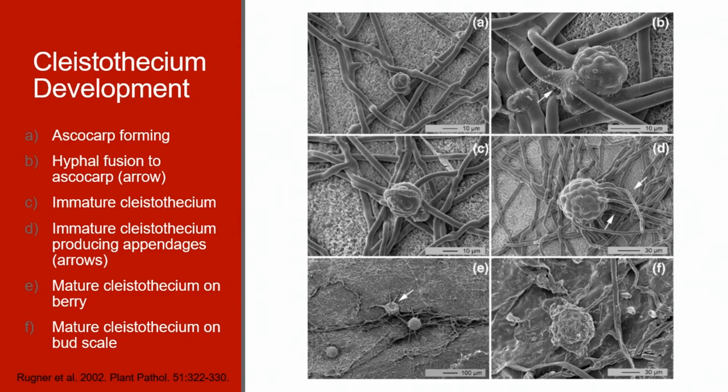Panel E is a mature Kleistothesium on a berry and F is a mature Kleistothesium on a bud scale. As a reminder, these Kleistothesia can be on any green tissue and cause infections if the environmental conditions are correct.